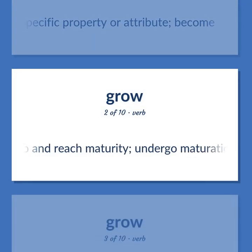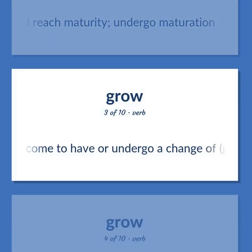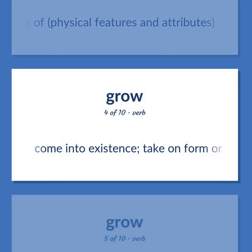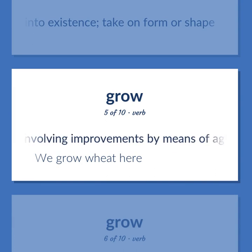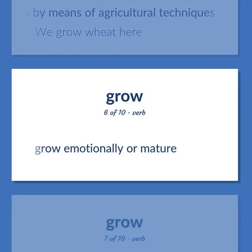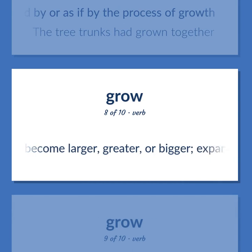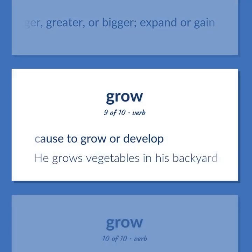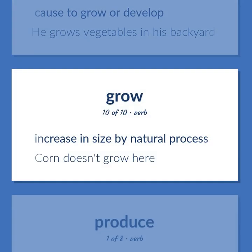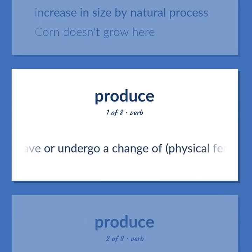Grow: Develop and reach maturity, undergo maturation. Come to have or undergo a change of physical features and attributes. Come into existence, take on form or shape. Cultivate by growing, often involving improvements by means of agricultural techniques — we grow wheat here. Grow emotionally or mature. Become attached by or as if by the process of growth — the tree trunks had grown together. Become larger, greater, or bigger, expand or gain. Cause to grow or develop — he grows vegetables in his backyard. Increase in size by natural process — corn doesn't grow here. Come to have or undergo a change of physical features and attributes.